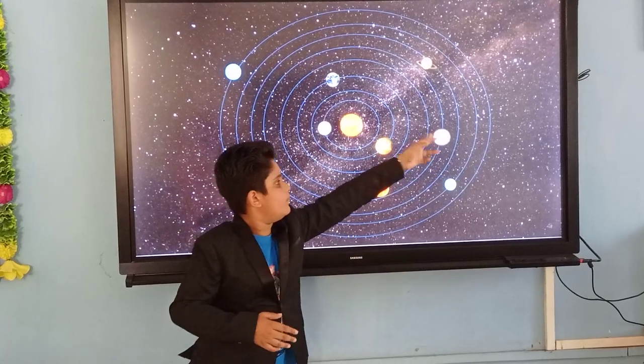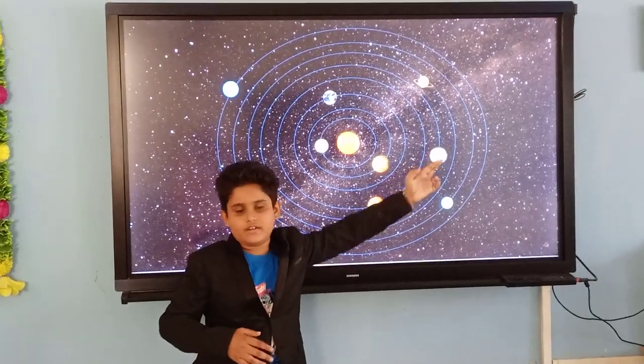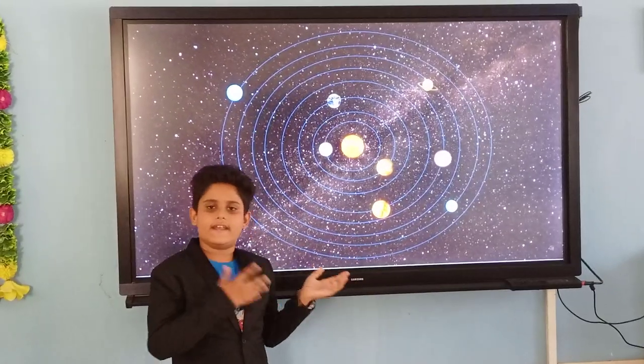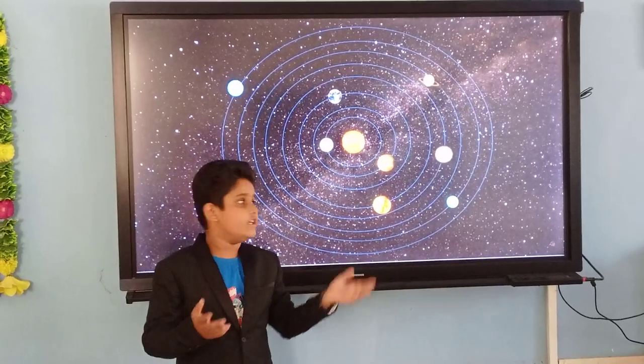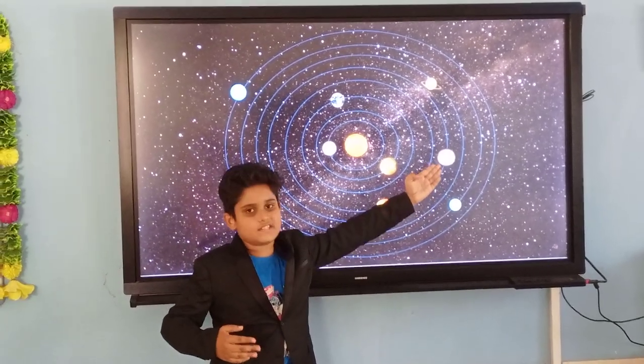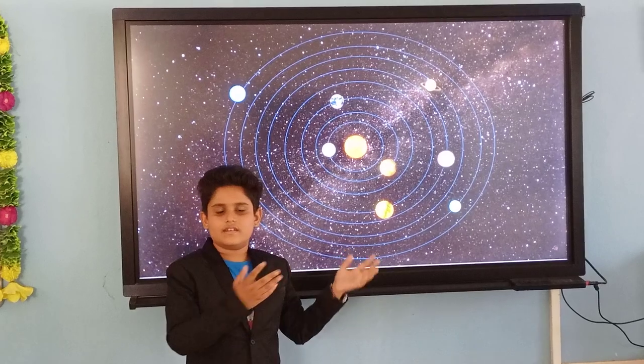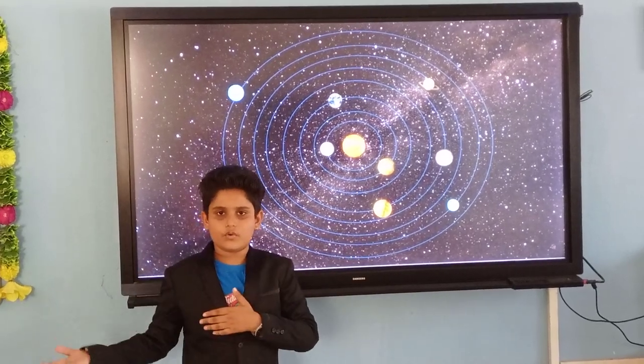Next is Jupiter. Jupiter is the biggest planet in the solar system, and it is the fifth planet. It is really the ammonia and water flowing.